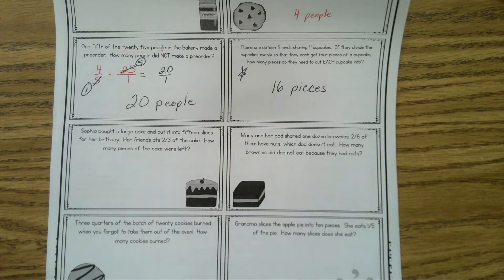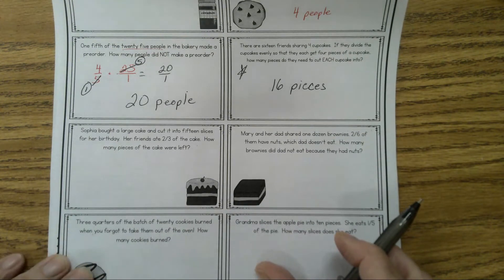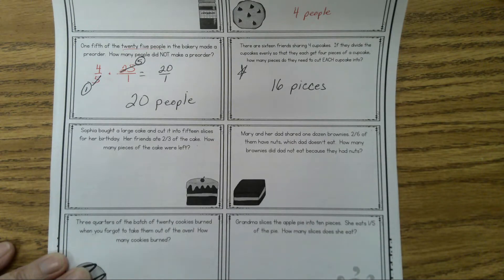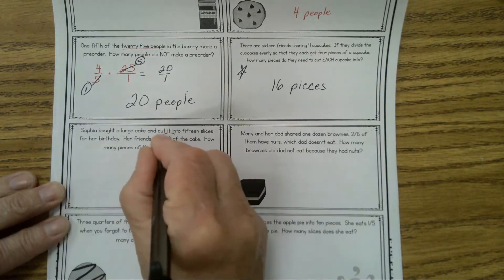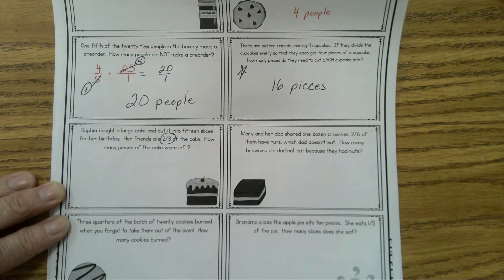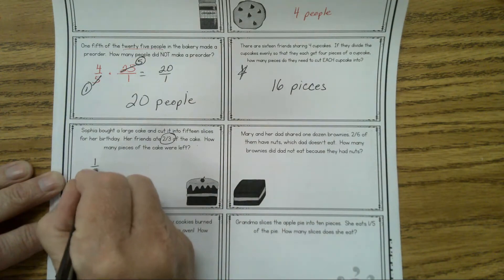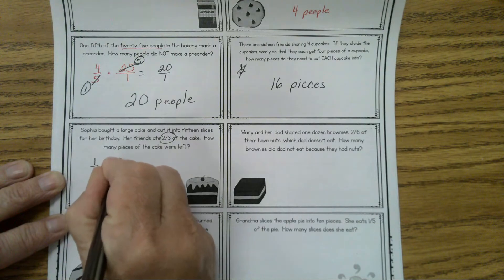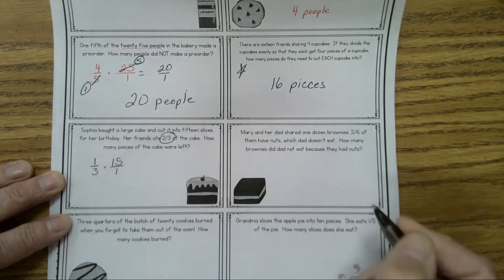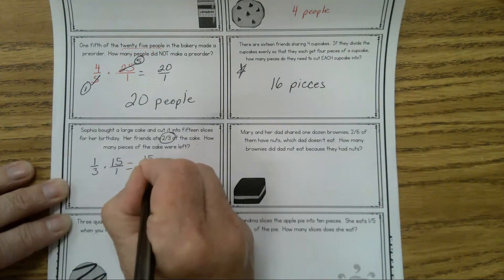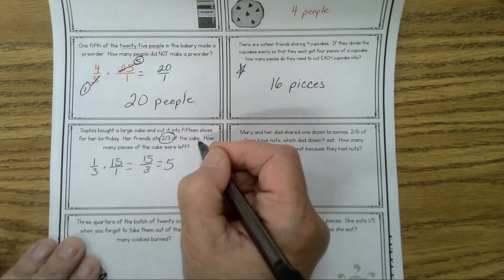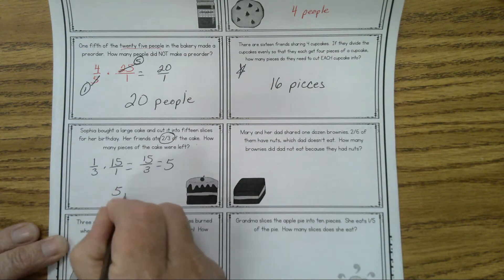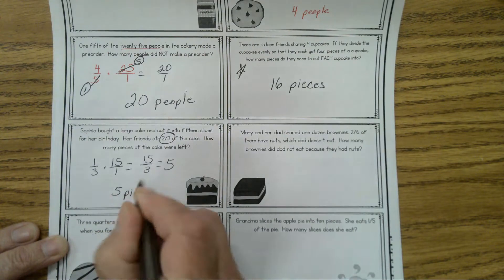Sophia's friend eats 2/3 of the cake. A friend eats 2/3 of the cake. So we're going to take 1/3 times 15 because the whole cake was cut up into 15 slices, right? We multiply, 15 divided by 3 equals 5. How many slices or pieces of cake are left? Five pieces. That's a nice amount to have left over. You can still have birthday cake on the next day.